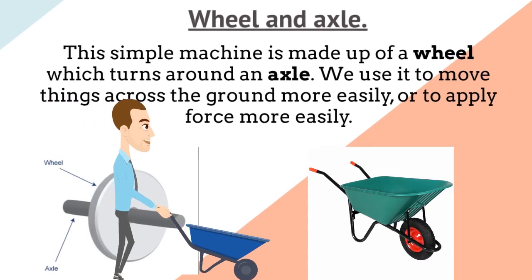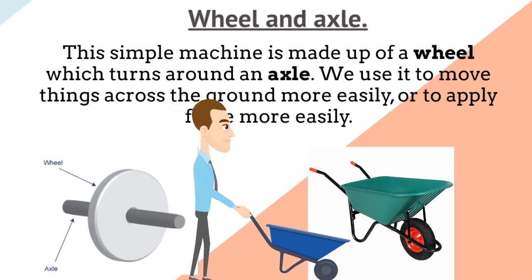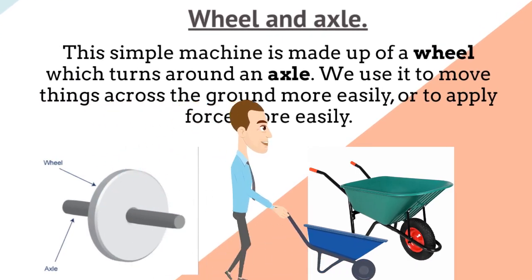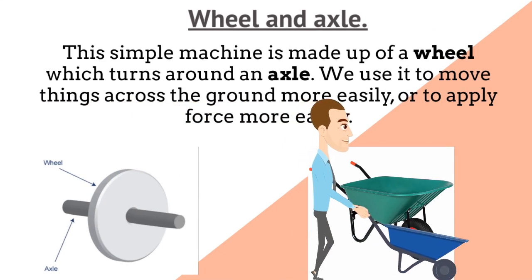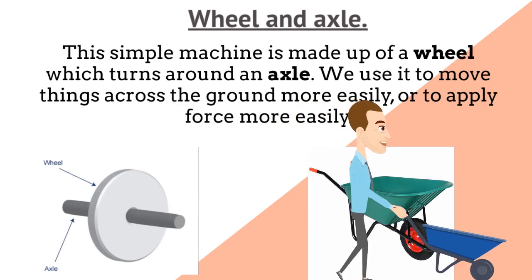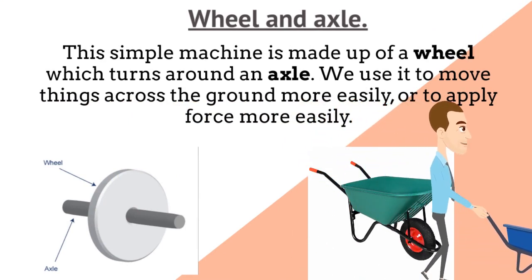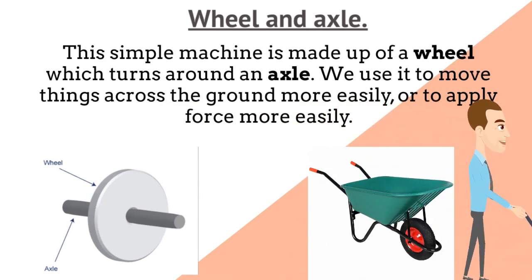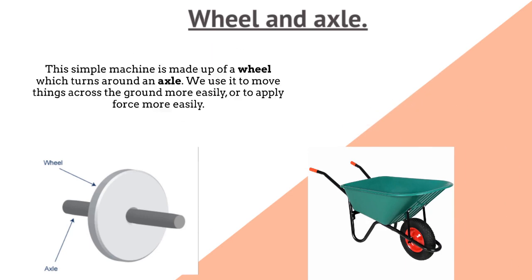Wheel and axle. This simple machine is made up of a wheel which turns around an axle. We use it to move things across the ground more easily or to apply force more easily.